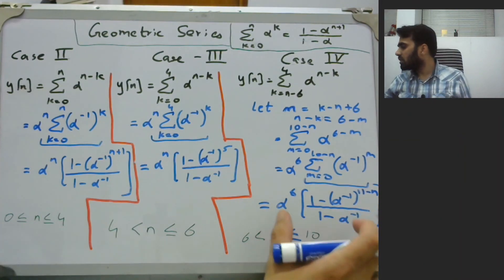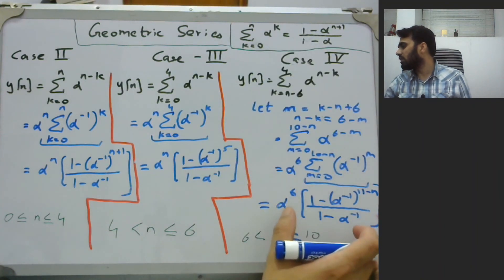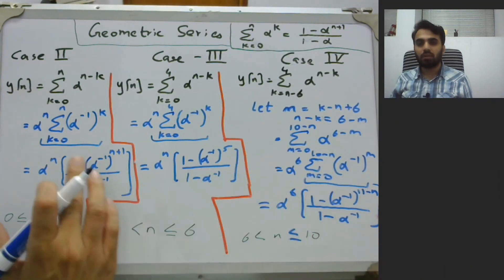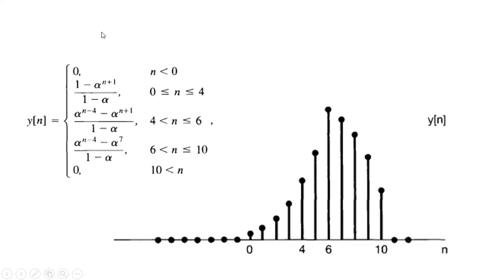The closed-form expressions remove the summation entirely. As a summary, the output y[n] is expressed as a piecewise (case) function: zero for n < 0, the respective closed-form formulas for 0 ≤ n ≤ 4, 4 < n ≤ 6, and 6 < n ≤ 10, and zero again for n > 10. This is the complete output for the given input x[n] and impulse response h[n].